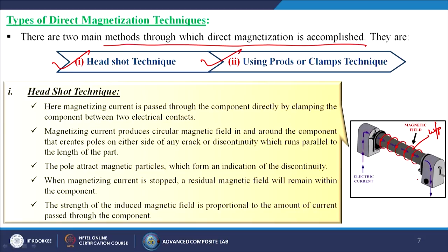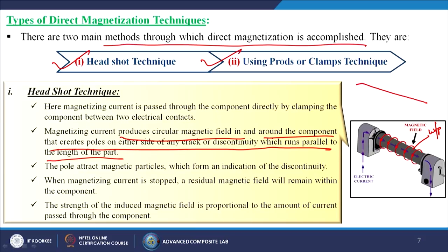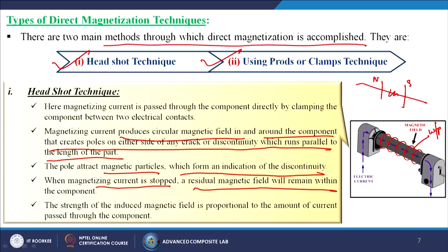The magnetizing current produces a circular magnetic field in and around the component that creates poles on either side of any crack or discontinuity running parallel to the length of the part. If there is a crack, it will generate either a north pole or south pole at that location. These poles attract magnetic particles which form an indication of the discontinuity. When the magnetizing current is stopped, a residual magnetic field will remain within the component, so after that we must demagnetize. The strength of the induced magnetic field is proportional to the amount of current passed through the component.